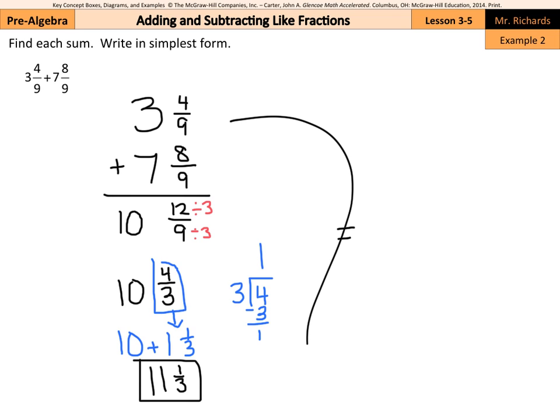Another way is to turn these into improper fractions. So 3 times 9 is 27, plus 4 is 31 ninths. Plus 7 times 9 is 63, plus 8 is 71 ninths. Add those two numbers together and we get 102 over 9. Then, to get this back into a mixed number, 102 divided by 9.